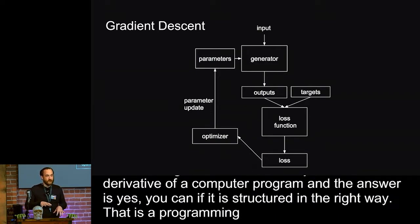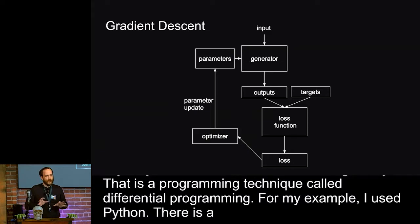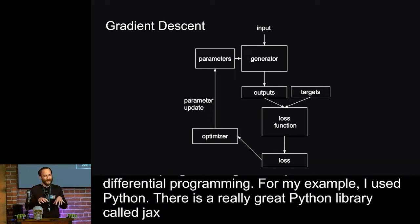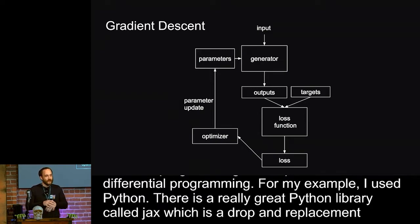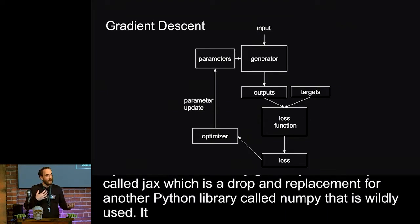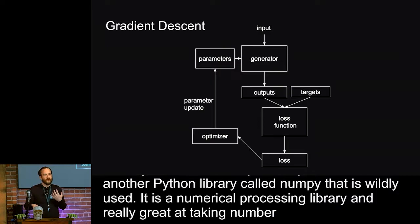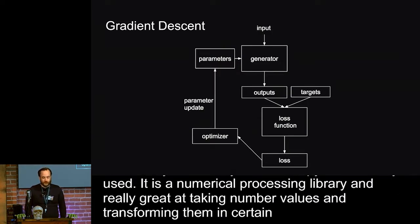For my examples, I used Python. There's a really great Python library called Jax, which is a drop-in replacement for another Python library called NumPy. It's really widely used. It's a numerical processing library. It's really great at taking number values and transforming them in certain ways. That works really great in generators and loss functions too.